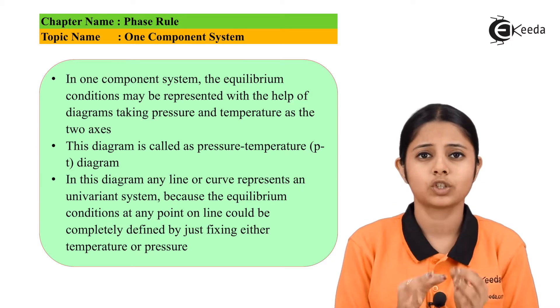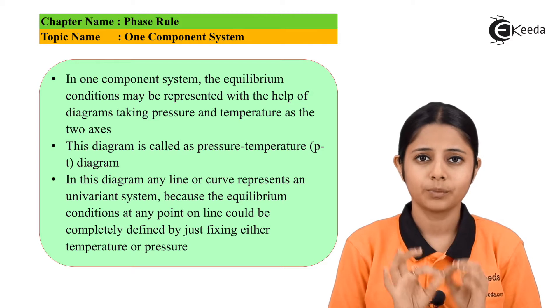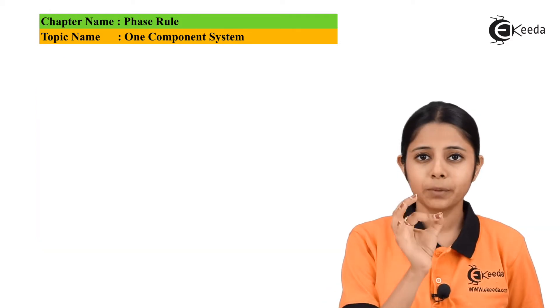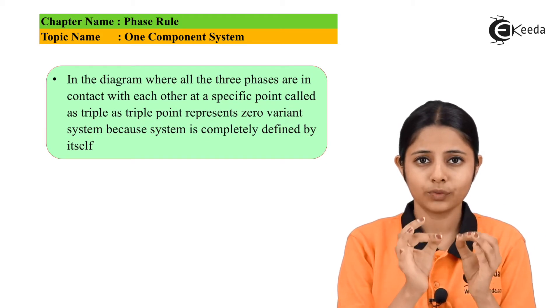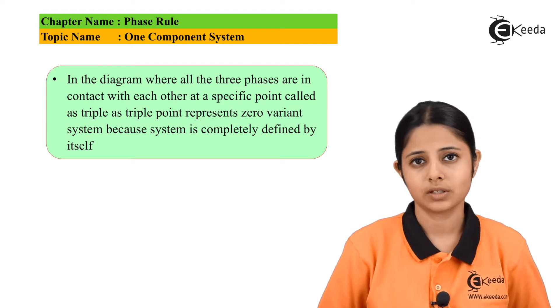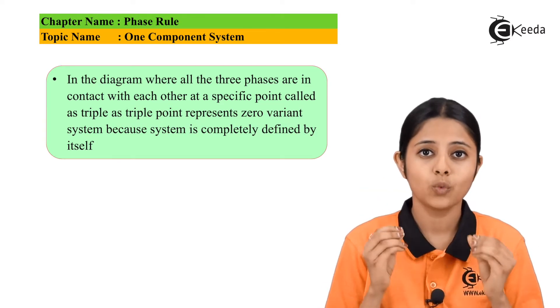There is a point which is known as the triple point, and at this triple point that particular component can attain all three phases at the same time. That particular temperature and pressure has been marked on the phase diagram and is known as the triple point of that one component system. This triple point is known as a zero variant point.